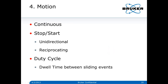The fourth thing of concern is motion. We can have a continuous motion or a start-stop motion, and start-stop is usually more severe than continuous, because if you remember the Stribeck curve, we can go from fully hydrodynamic back down into the boundary regime, and wear happens much more readily in the boundary regime. Unidirectional is different from reciprocating because you can start and stop going around in a circle, or reciprocating changes the direction of sliding. The duty cycle is our fourth motion consideration — that's the dwell time between sliding events.